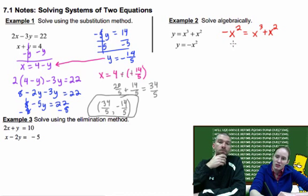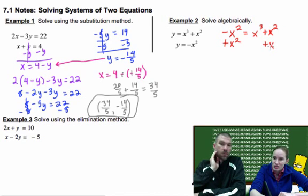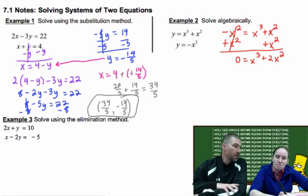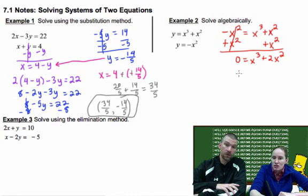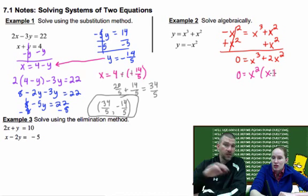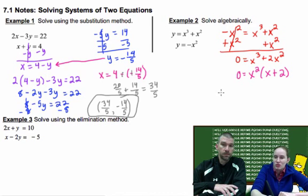To solve this algebraically, this was a while ago that we did this. We want to get everything on one side of our equation. So 0 equals x cubed plus 2x squared. And then factor out the greatest common factor, which in this case would be the x squared. We can't do the 2 because there's only 1. So you factor out the x squared, and that leaves you with x plus 2. And then you set each part of that equal to 0.